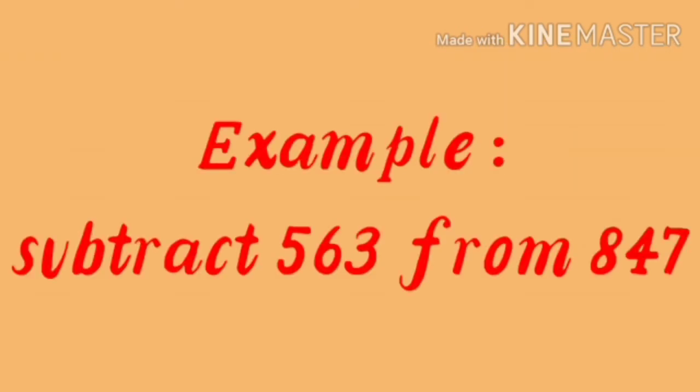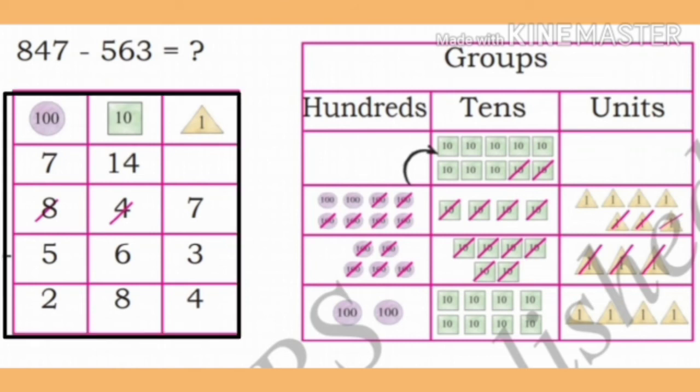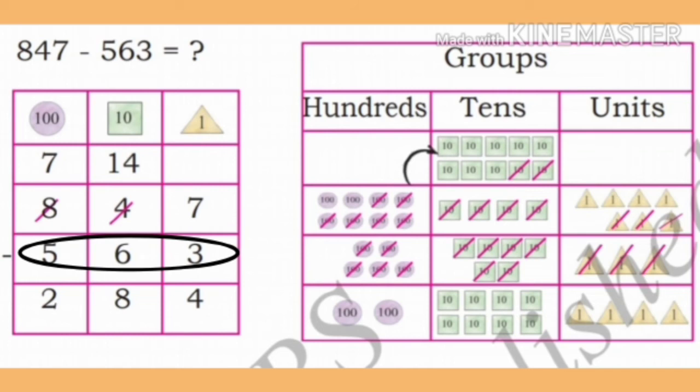Observe the next example, children. Subtract 563 from 847. This sum is also represented pictorially as shown. Further observe, children. Write the place value table. Write first the minuend 847. Minus, write the subtrahend 563. Let us find the difference.